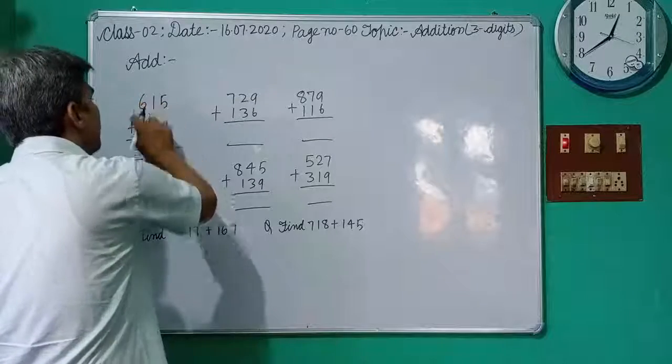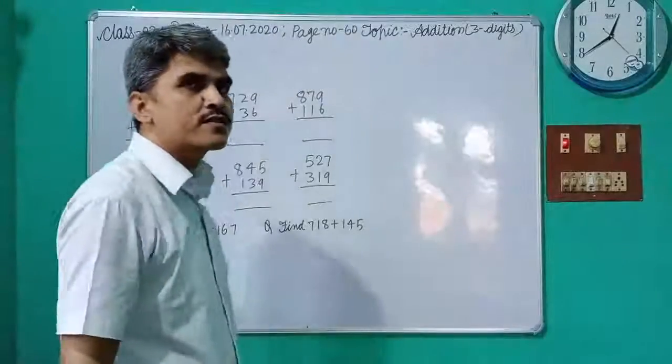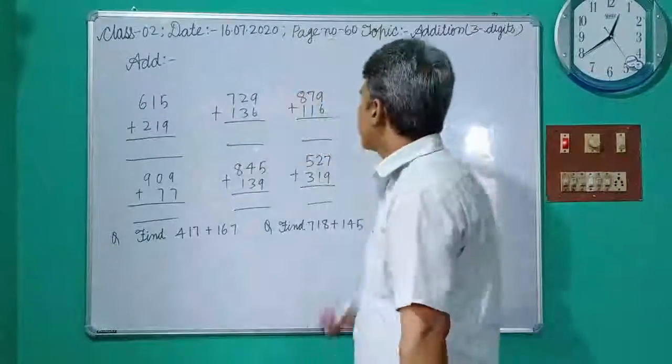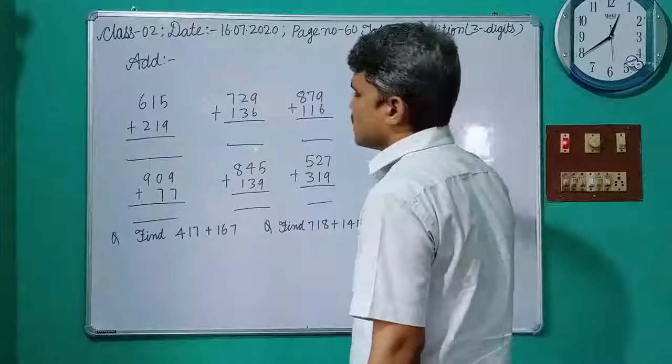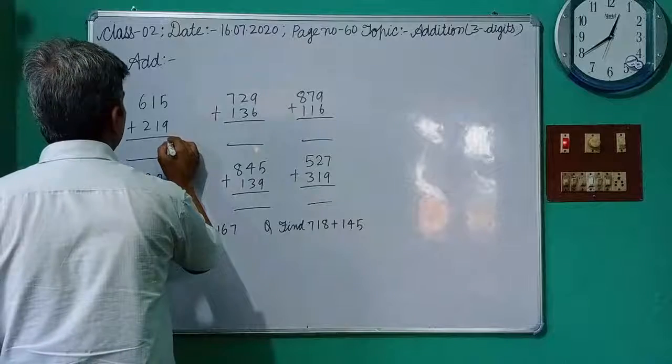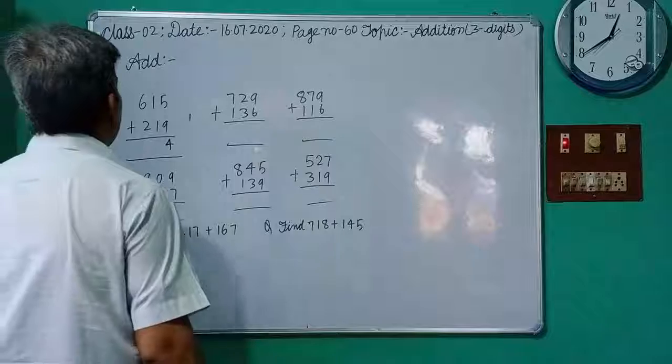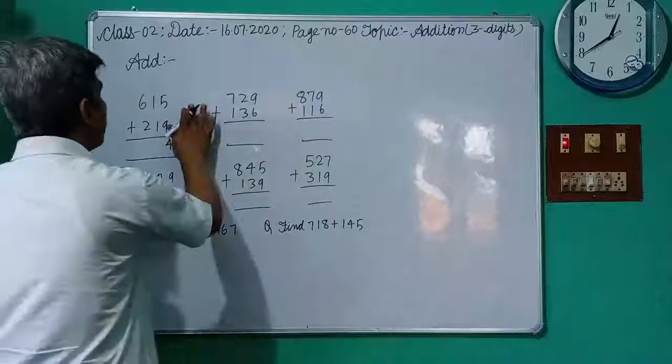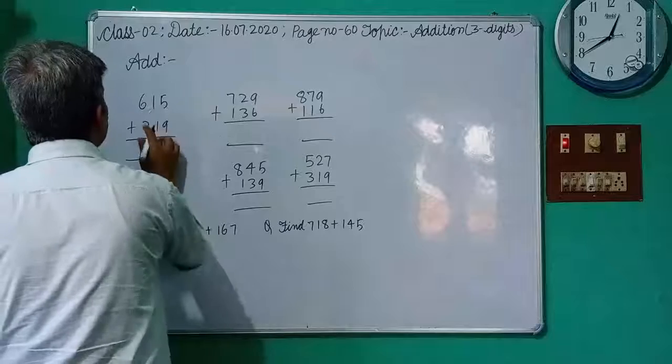So 9 plus 5, not counting fingers, always practice 9 plus 5, 8 plus 3, directly you find out answers. So 9 plus 5 is 14. Here write down 4, and 1 is left. 1 plus 1 plus 2 is 3. Write down 3, and no any carrying. So 6 plus 2 is 8.